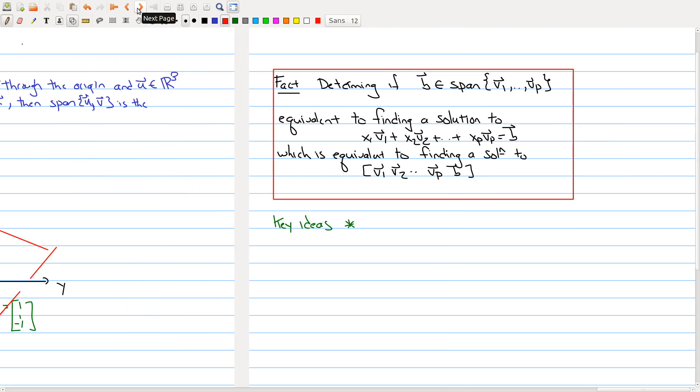The next fact really puts all the pieces together of today's lecture. Let's say we have a collection of vectors and we can talk about the span of those vectors—all linear combinations of v1 through vp. Many times we want to determine if a vector v belongs to the span.